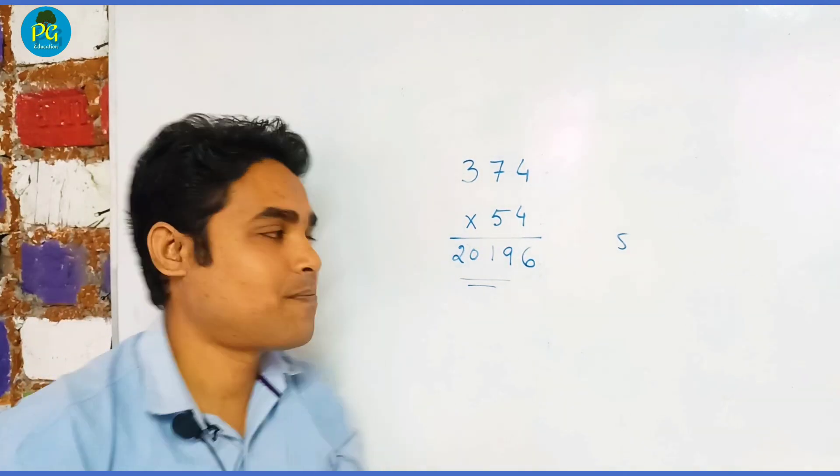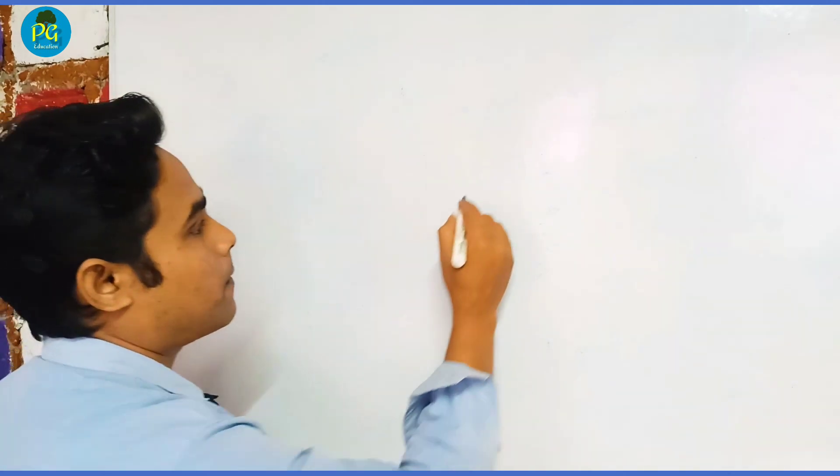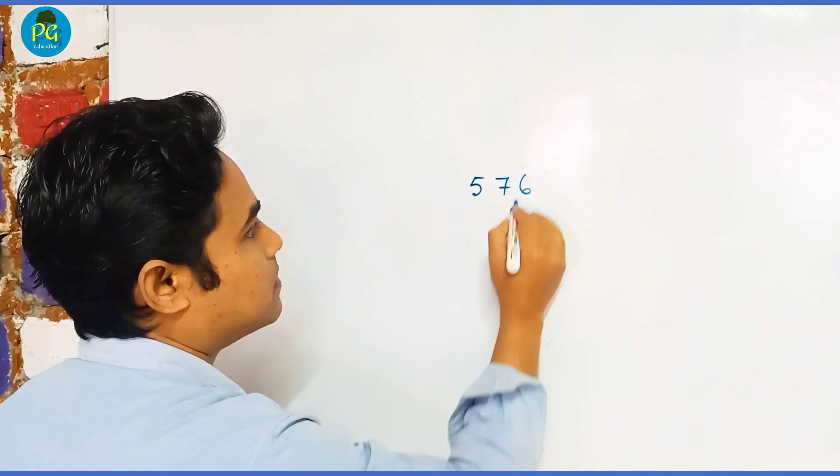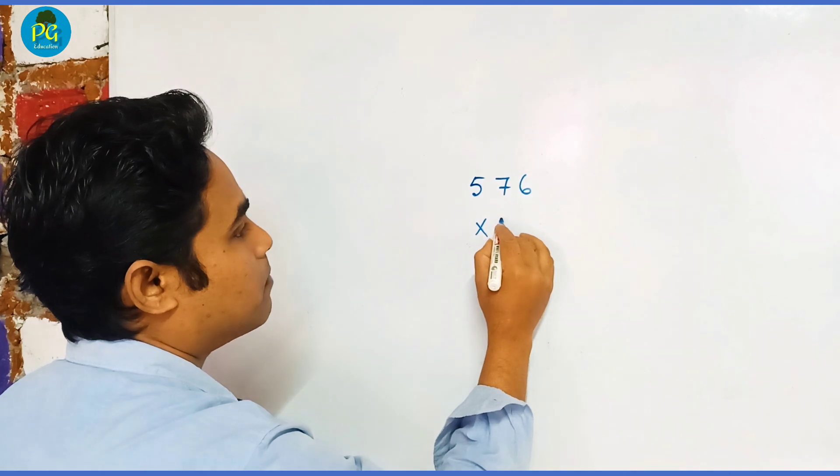Let us take another example and I will do it first. So 576, let's say, and multiply it by 64.